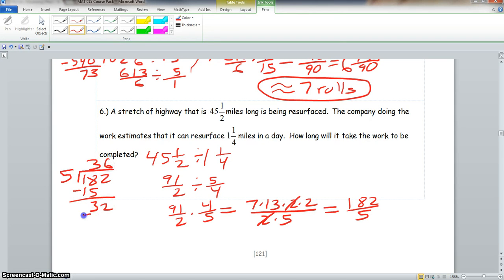5 goes into 32 six times. And now we have a remainder of 2. So this will give you 36 and 2 fifths. Now it says, how long will it take the work to be completed? You can either leave it as 36 and 2 fifths days.